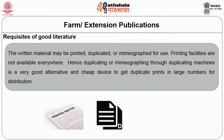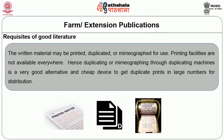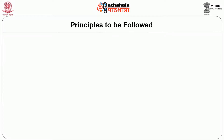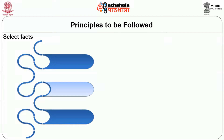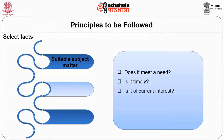The written material may be printed, duplicated, or mimeographed. Where printing facilities are not available, duplicating or mimeographing through duplicating machines is a good, cheap alternative for getting prints in large numbers for distribution. The three main aspects of any written communication begin with selecting the facts — choosing a suitable subject matter for which you plan to teach. You should ask: Does the subject matter meet a need? Is it timely? Is it of current interest? Does it apply to your area? Is the information practical?